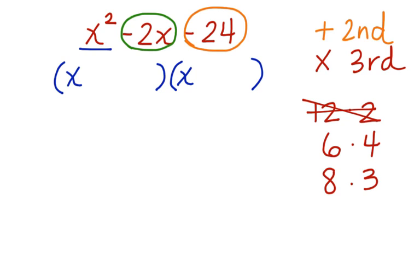6 times 4 multiplies together to give us 24. And it could add together to give us negative 2 if this was a negative and this was a positive. So this is a possible.